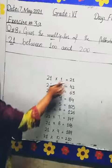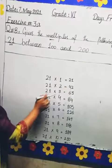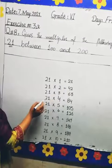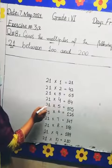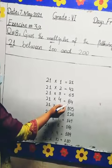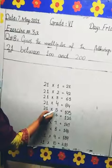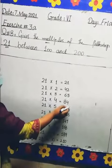21 × 1 = 21, 21 × 2 = 42, 21 × 3 = 63, 21 × 4 = 84, 21 × 5 = 105. Now we see 105 is above 100.